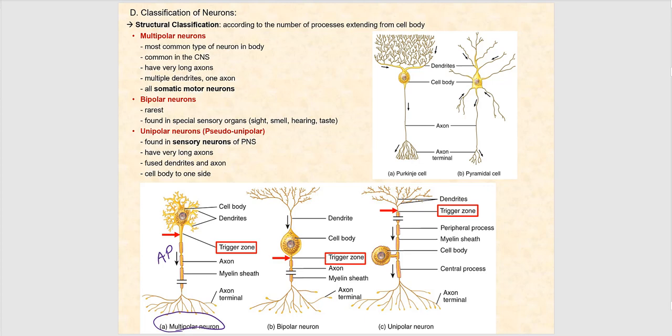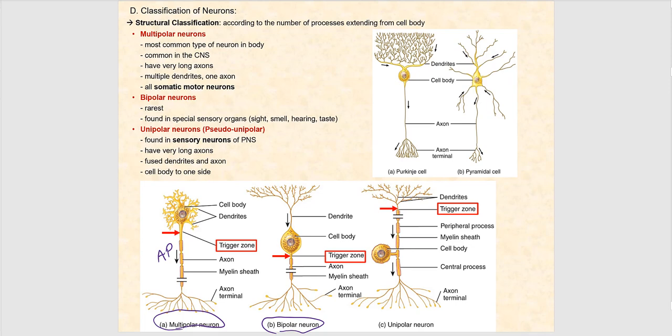The next structural classification is the bipolar neuron, which is extremely rare. Bipolar neurons are found in the special sense organs — so vision, smell, hearing, and taste all involve bipolar neurons.